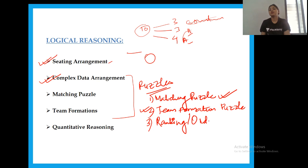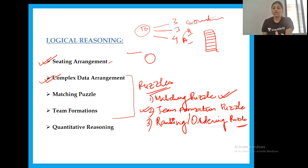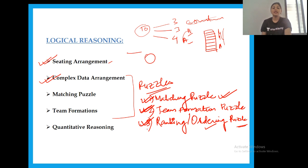The third type is a Ranking or Ordering Puzzle. Here you have to rank or order people — for example, eight people living on eight floors of an apartment building — based on given clues and constraints. These three types — matching puzzle, team formation puzzle, and ranking puzzle — are the main subtypes. Any other puzzle that doesn't fit these three categories falls under complex data arrangement.